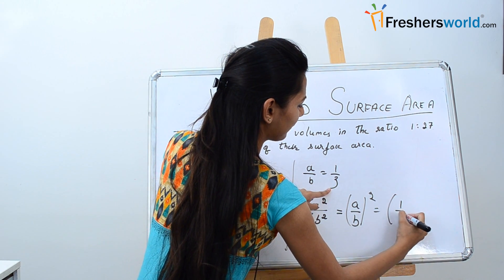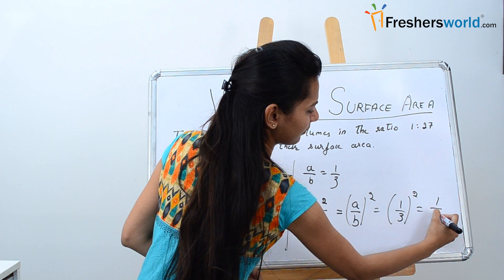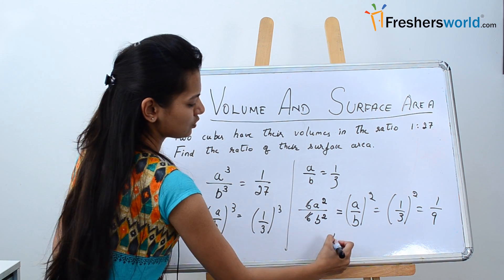So this would be 1 by 3 the whole squared. That is equal to 1 by 9. So the ratio is 1 is to 9.